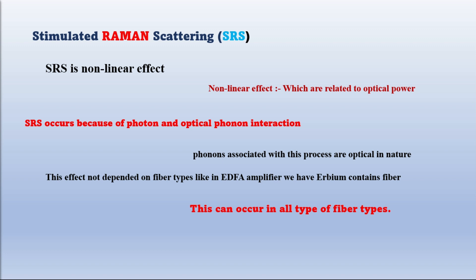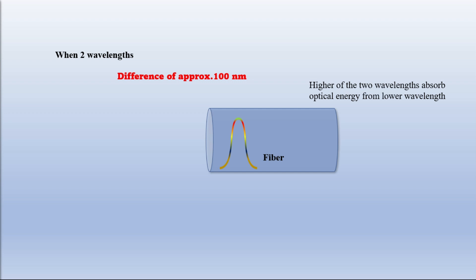Let's understand how this works with an example. This principle says when two wavelengths separated by approximately 100 nanometers are transmitted simultaneously into the fiber, the optical signal operating at the higher of the two wavelengths is able to absorb optical energy from the lower wavelength.